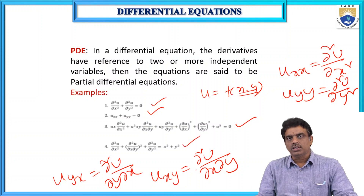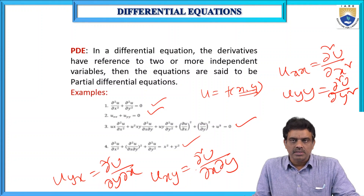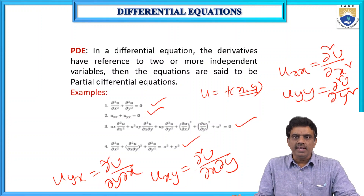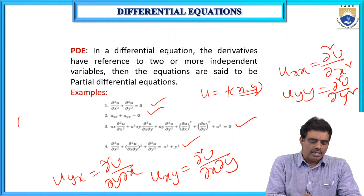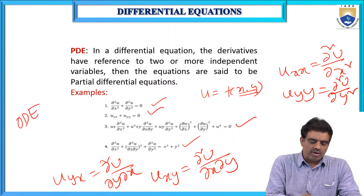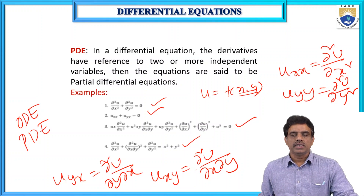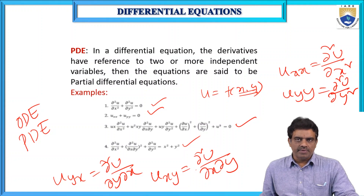So, the fourth example is also a partial differential equation. Briefly: if the derivatives have reference to a single variable, it is called an ordinary differential equation; if the derivatives have reference to two or more variables, it is called a partial differential equation. This is the classification of differential equations.